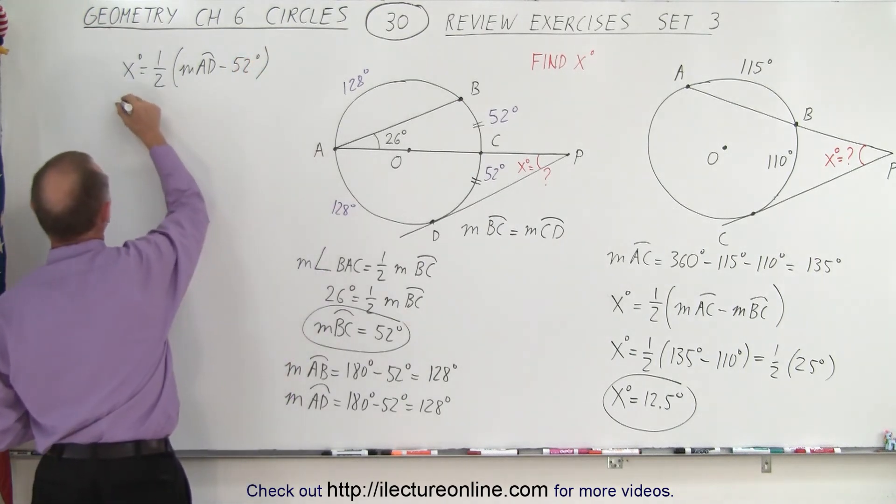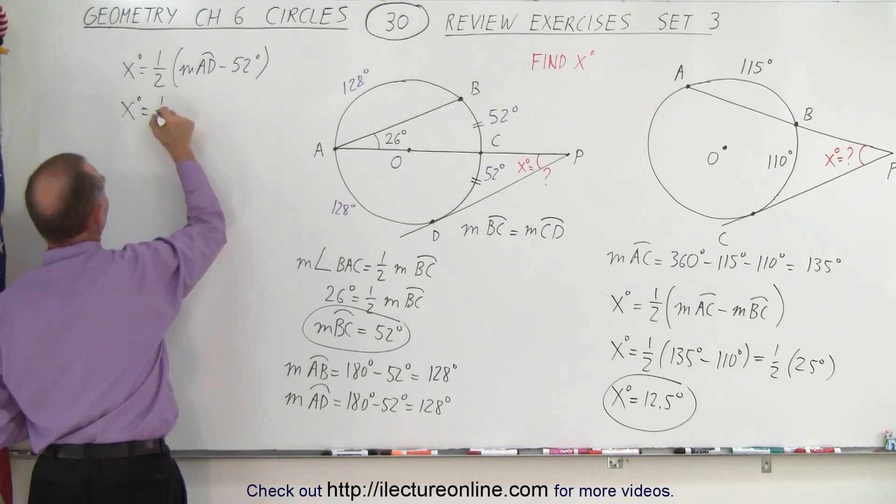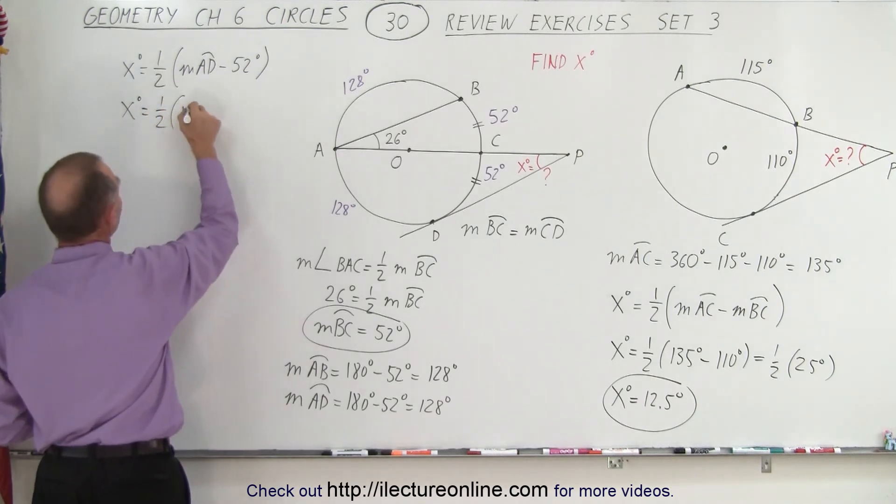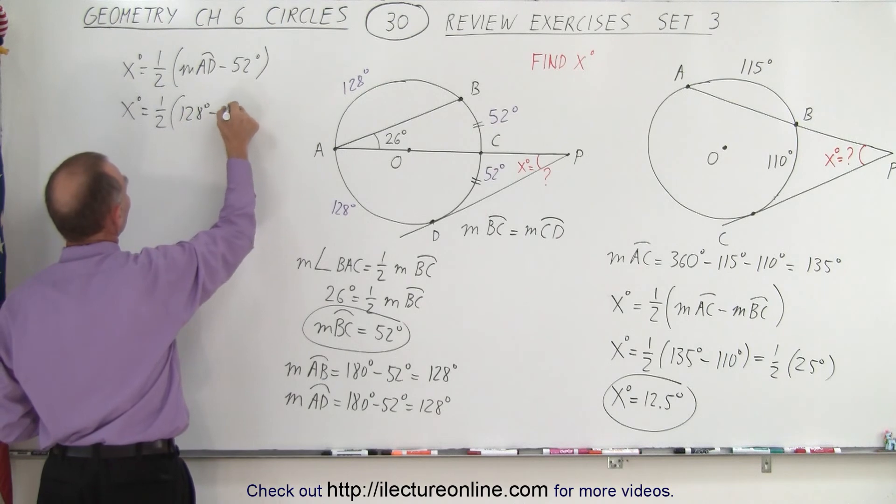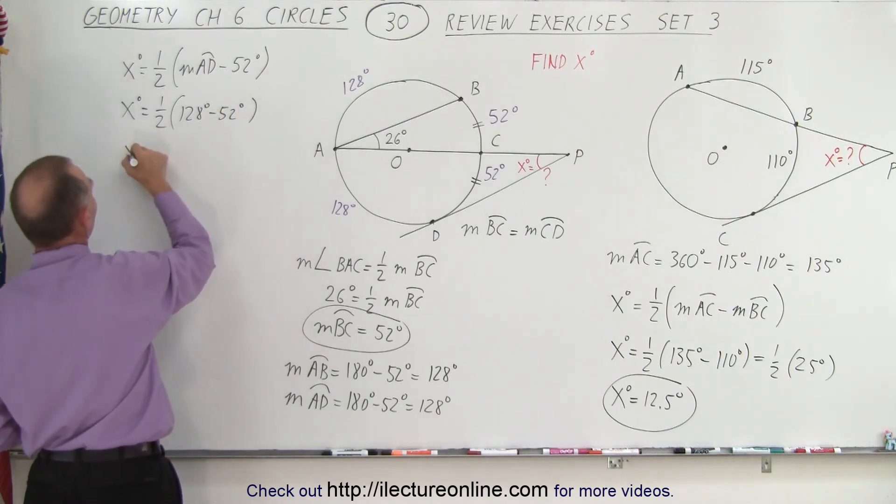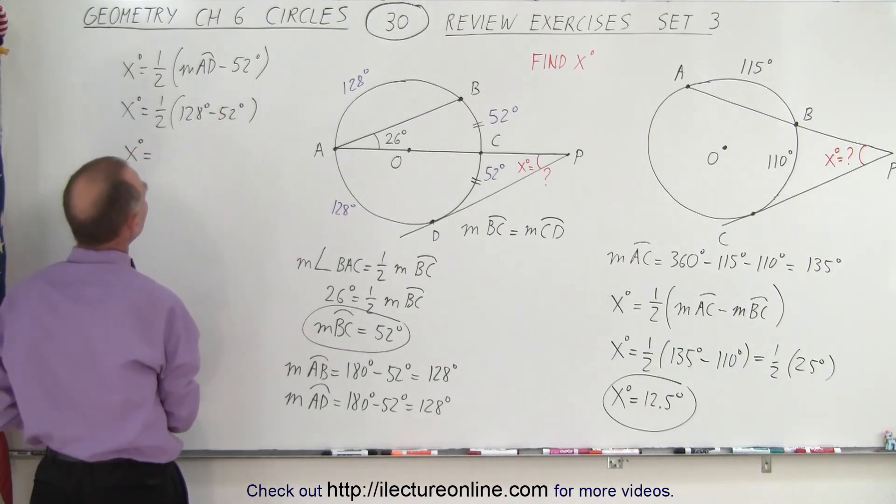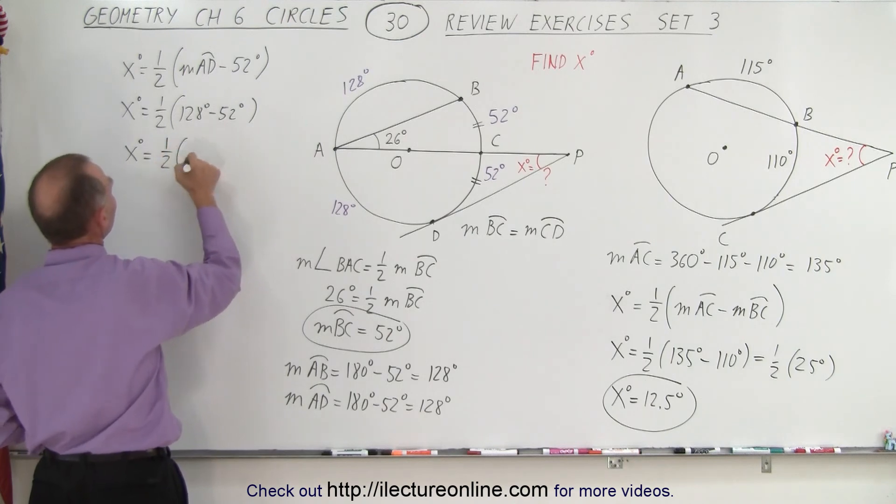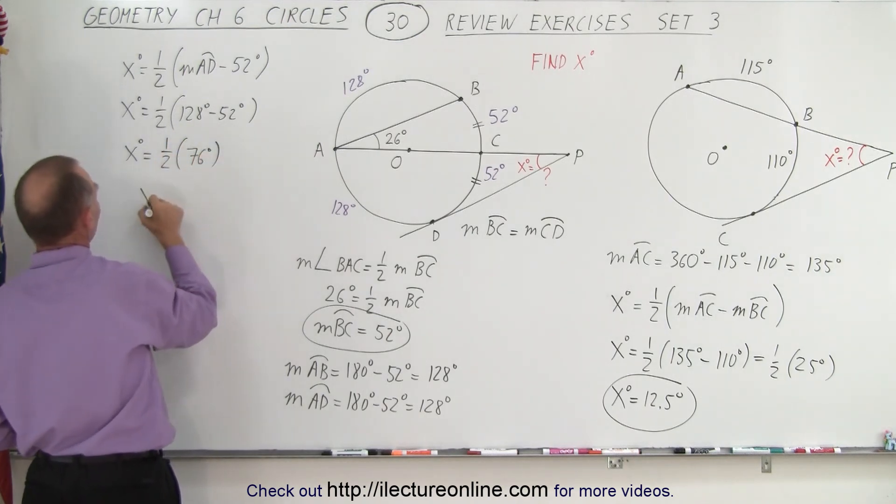And so this is equal to x equals one-half times the measure from A to D, which is 128 degrees minus 52 degrees. So half of that is equal to one-half times, that would be 76 degrees, and therefore x degrees equals 38 degrees.